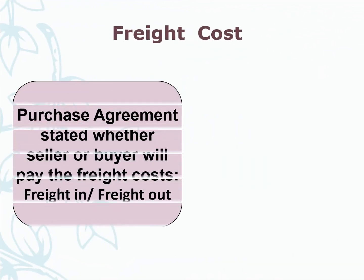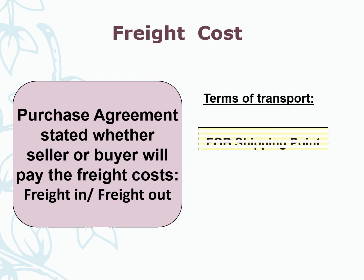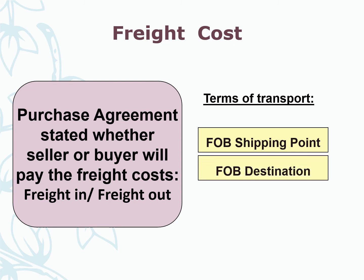Freight cost. Freight cost is included in the purchase agreement, which states whether the seller or buyer will pay the freight cost. There are two types of freight costs: freight in and freight out. Freight in is included in the purchase cost as part of cost of goods sold. Freight out is an expense under operating expenses. The terms of transport are FOB shipping point and FOB destination.